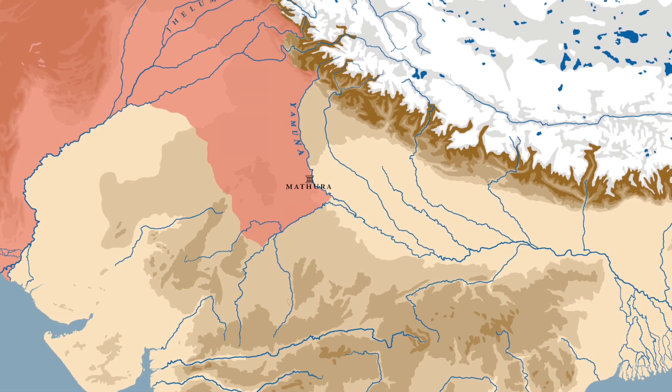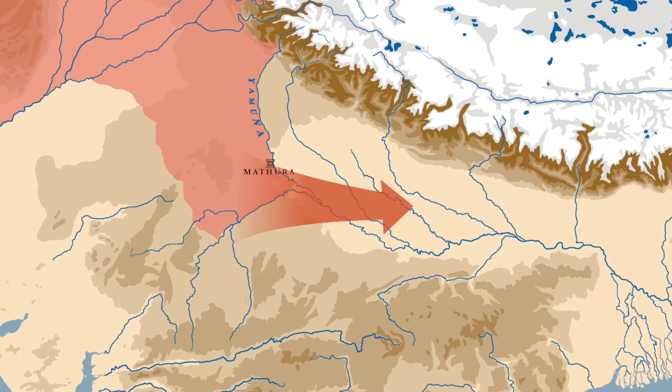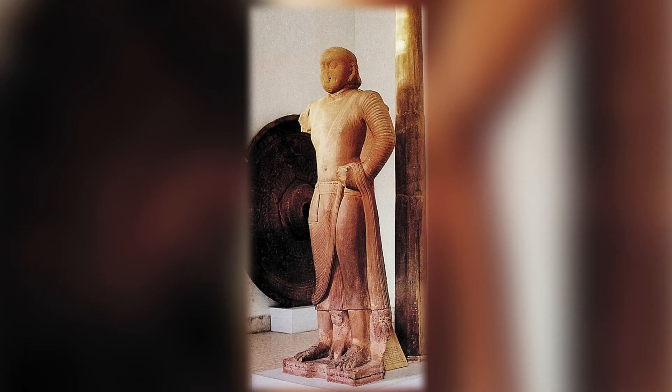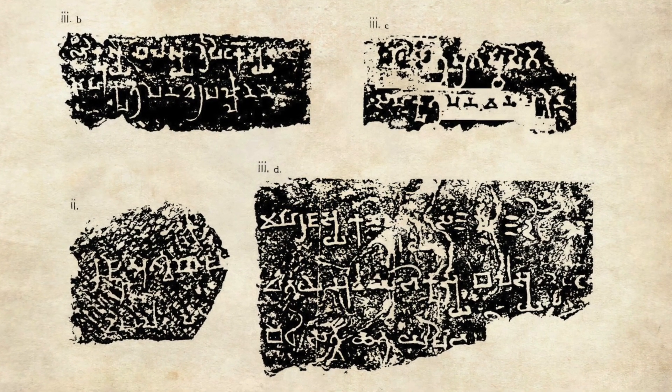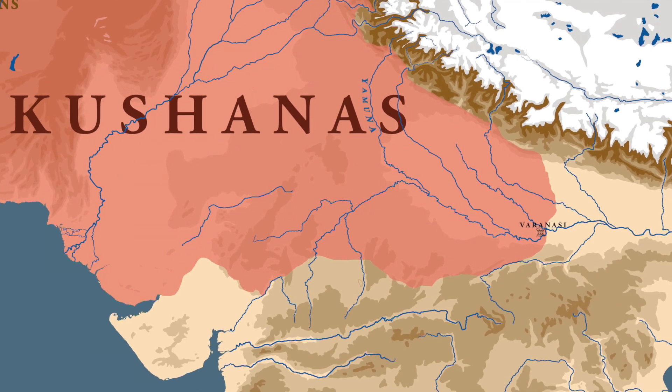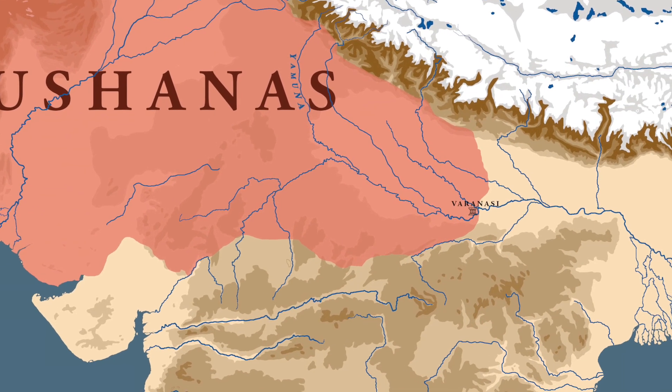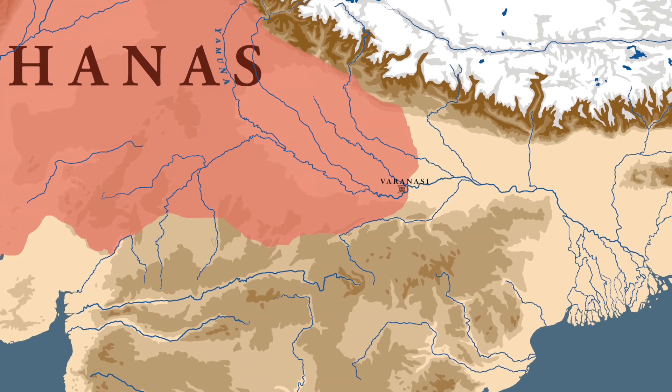The first stage of Kanishka's conquest was primarily focused in India, particularly in the Ganga valley east of Mathura. To determine how far the Kushana army went, we look at an inscription found on a statue of a Bodhisattva at Sarnath. This inscription tells us that the statue of Bal Bodhisattva was commissioned in the third year of Kanishka's reign, confirming that the region around Varanasi was under Kushana control by then.